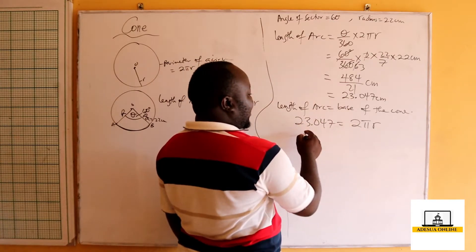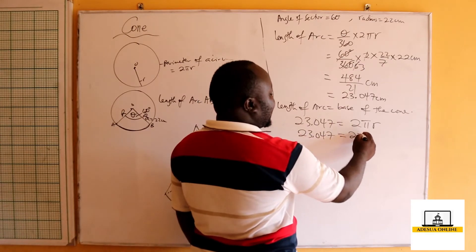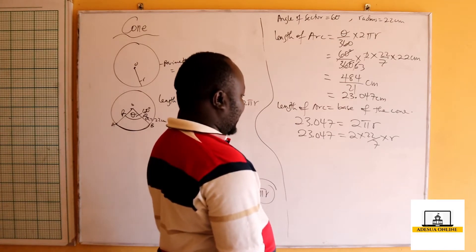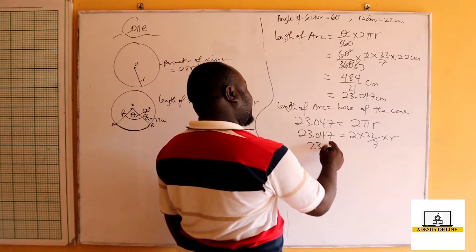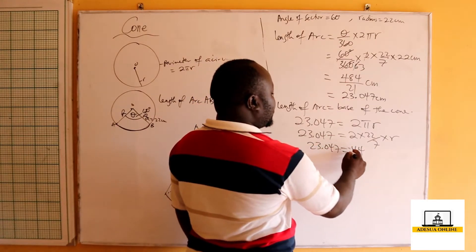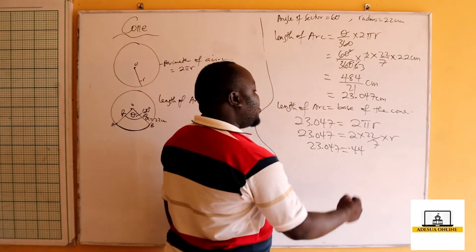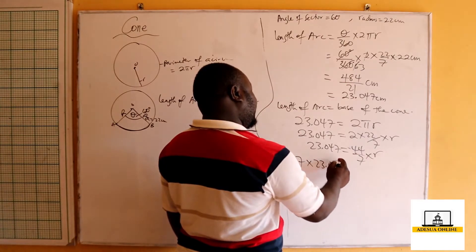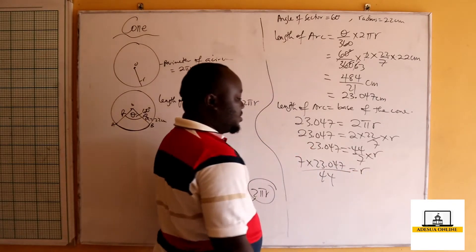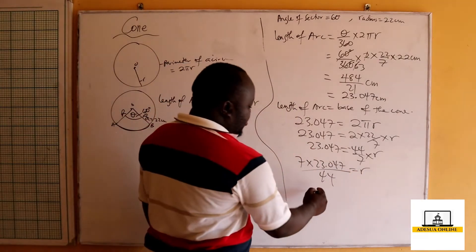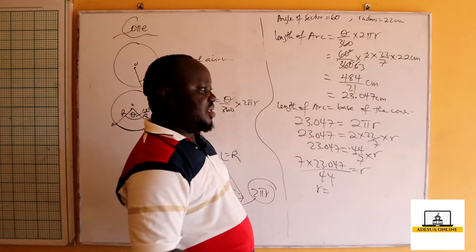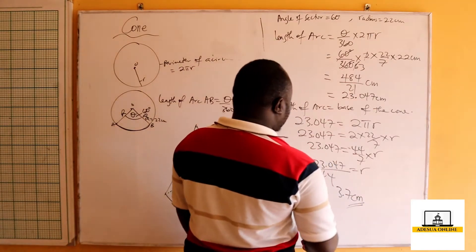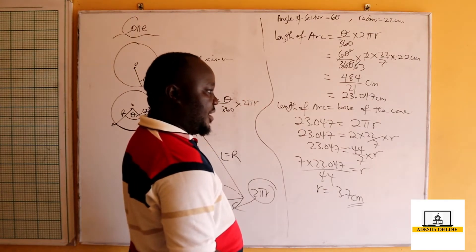Finding the radius of the cone: 23.047 equals 2 times 22 over 7 times r, which is 44 over 7 times r. Making r the subject: r equals 7 times 23.047 over 44. Solving this gives us the radius equal to approximately 3.7 centimeters.